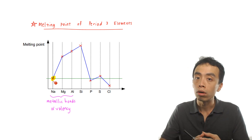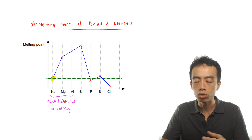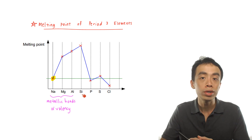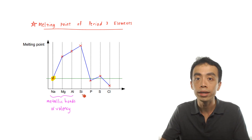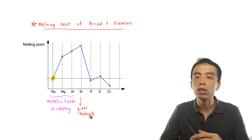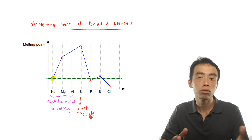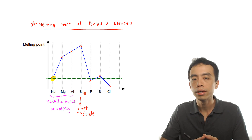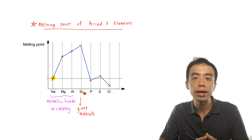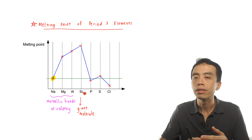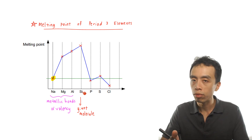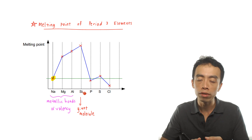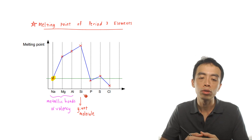The melting point for metals is related to metallic bond strength, which is in turn related to valency. Now for silicon, which is a giant covalent compound, we expect the melting point to be very high because of strong and extensive covalent bonds throughout the molecule. It requires a lot of energy to overcome all these bonds, so the melting point of silicon is expected to be very high.